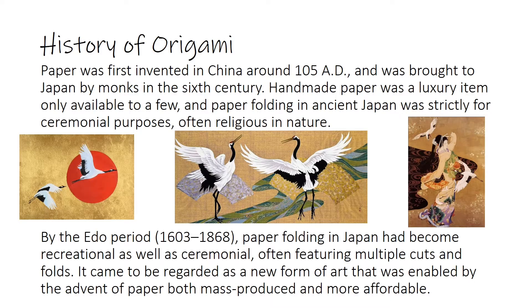First let's learn the history of origami. Paper was first invented in China around 105 AD and was brought to Japan by monks in the 6th century. Handmade paper was a luxury item only available to few and paper folding in ancient Japan was strictly for ceremonial purposes, often religious in nature.